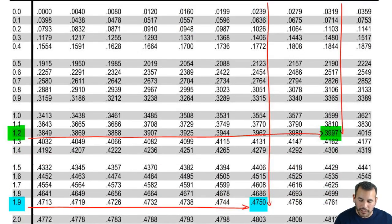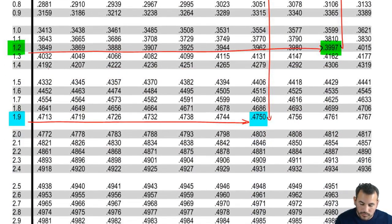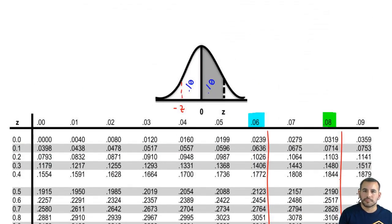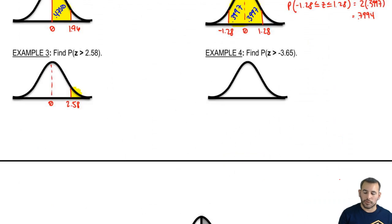Once we look up 2.58, we get 2.5, and then 0.08 is the same column that 3997 was on. We got 0.4951. Let's go back up to our problem. What area does that correspond to? It's from 0 to 2.58. Here's 0.4951. Now, is that our answer?